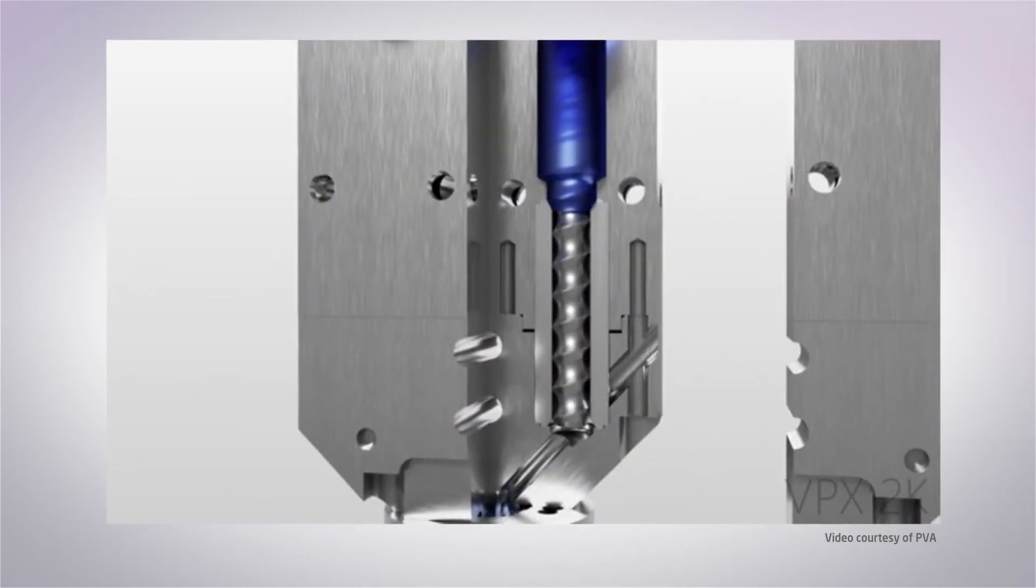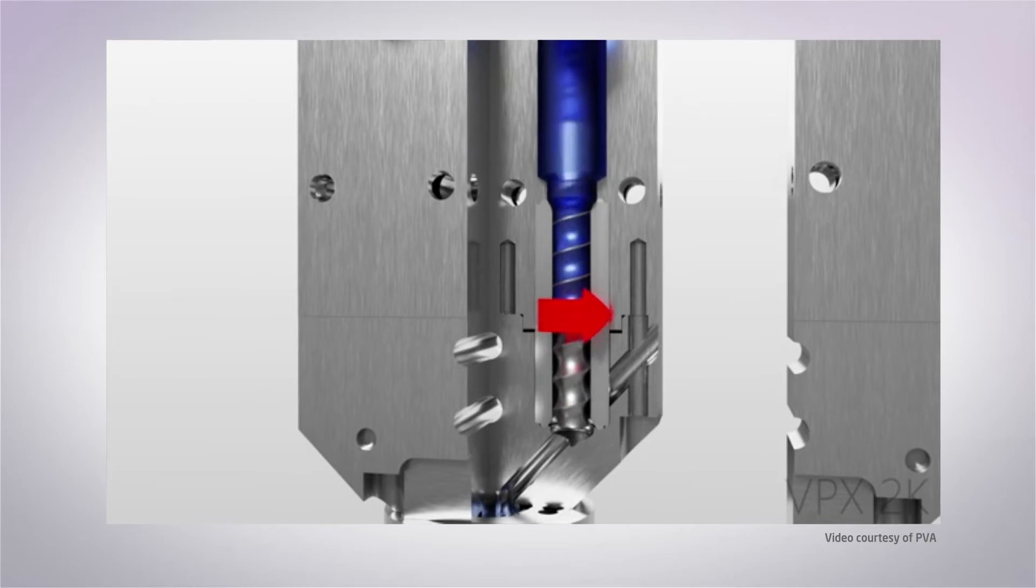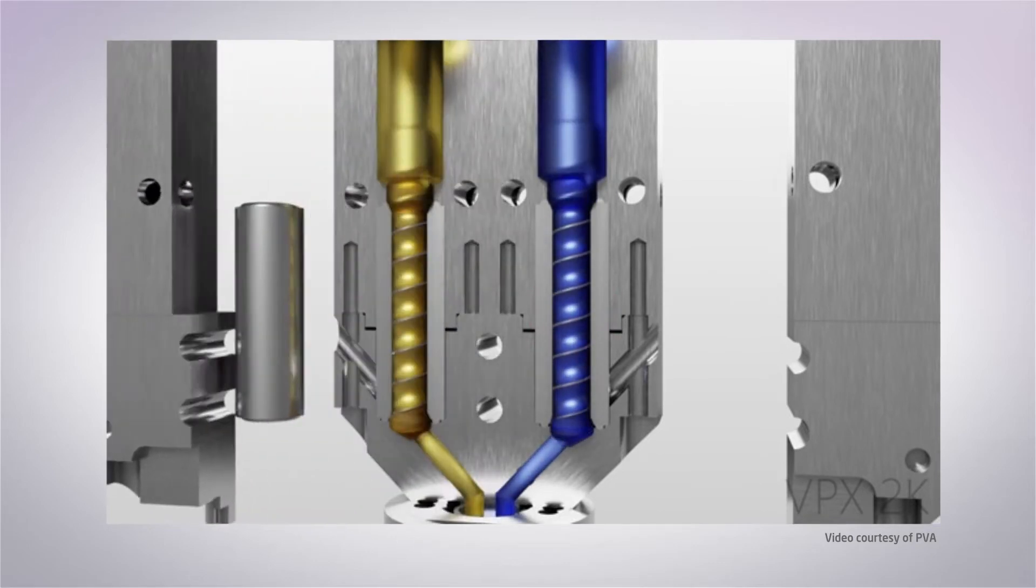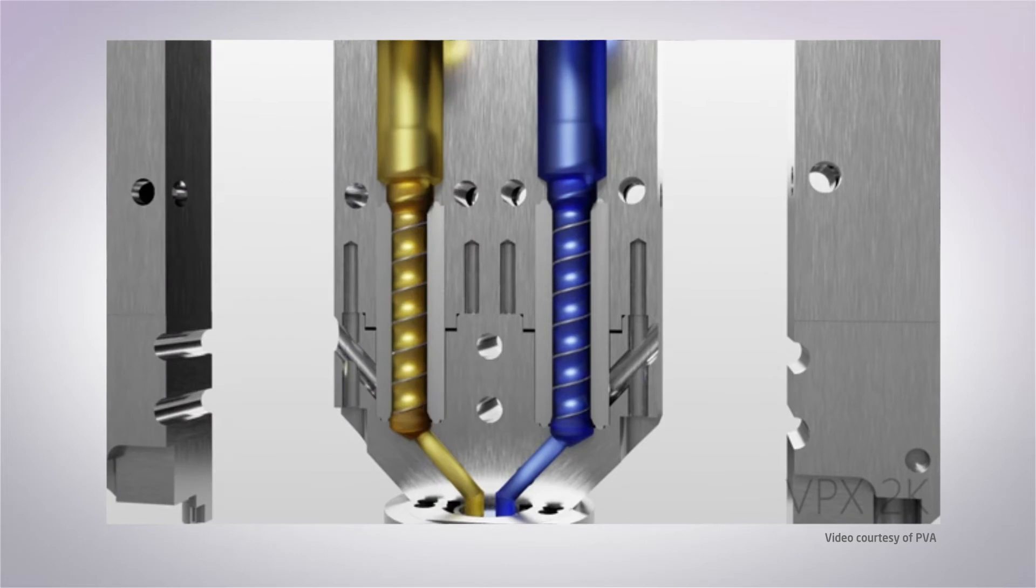However, as the material moves down the valve, it enters into a progressive cavity pump, effectively a helix screw. This consists of a series of cavities, and with each turn, the material passes from one cavity to another, hence progressive cavity.